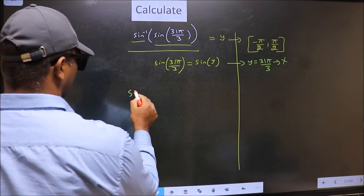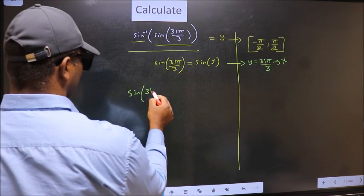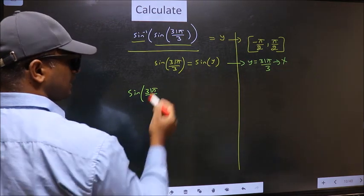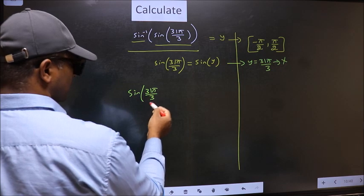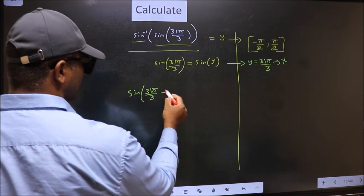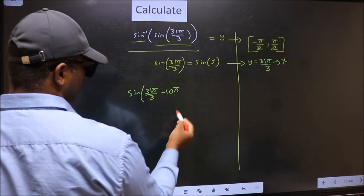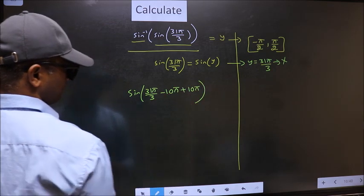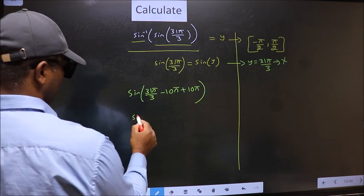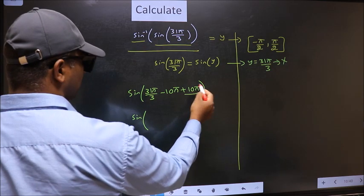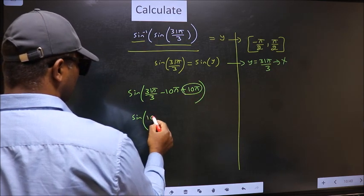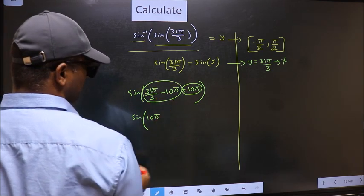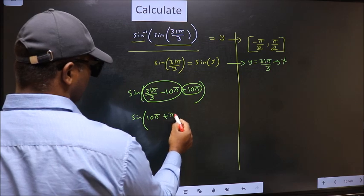Sin 31π by 3 is exceeding that interval, so we should decrease it. To decrease, I subtract 10π. Now whatever you are subtracting, add the same thing. Sin 10π. Now 10π I write at the start, and now you calculate this: 31π by 3 minus 10π. We get plus π by 3.